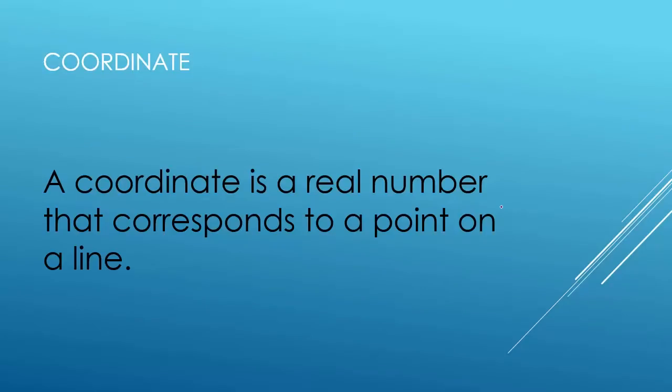Let's start with some vocabulary. Our first word is coordinate. A coordinate is a real number that corresponds to a point on a line. An example of a coordinate would be any number — so 5 is a coordinate, 10 is a coordinate, 12.6 is a coordinate.